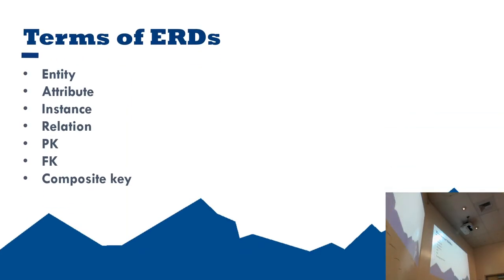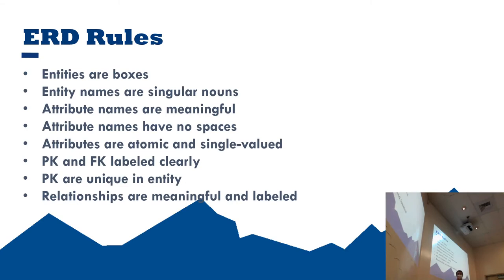With ERDs, we change up the terminology a little. We call a table an entity, a column an attribute, and a row an instance. Everything else stays the same.